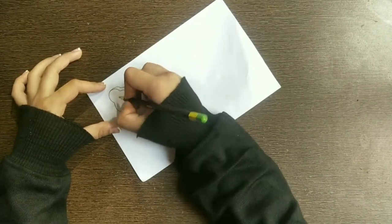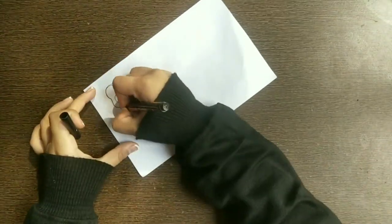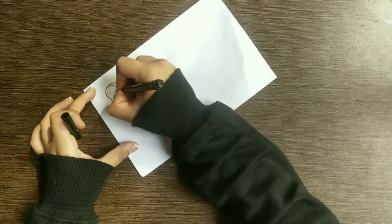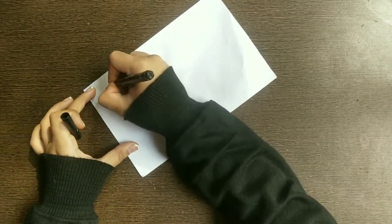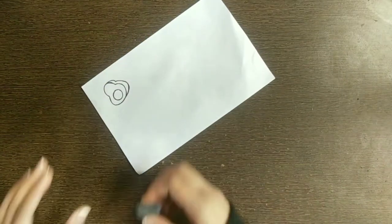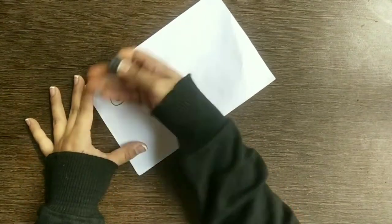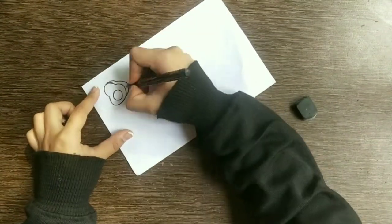Okay, so for the method one you just have to do whatever you wanted, but I am making an avocado. After that I am outlining it with a black marker and rubbing out all the pencil marks.